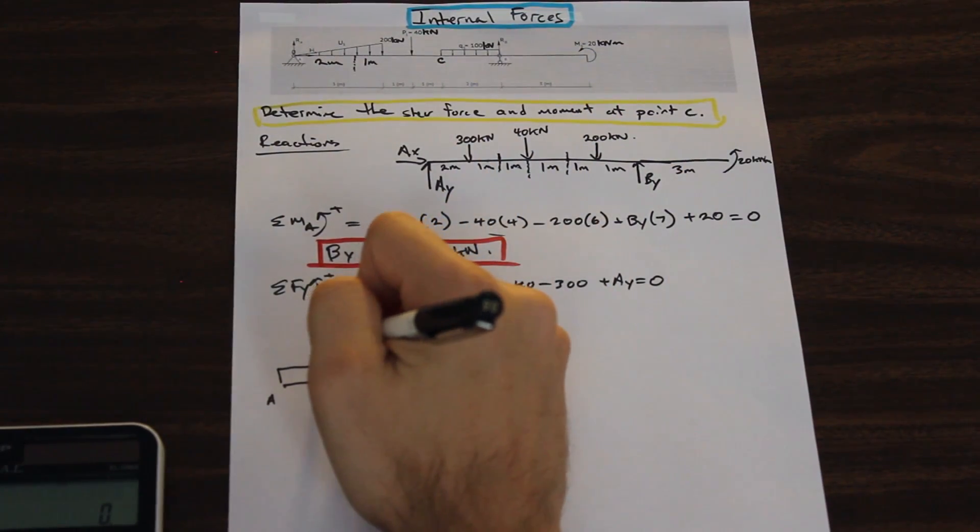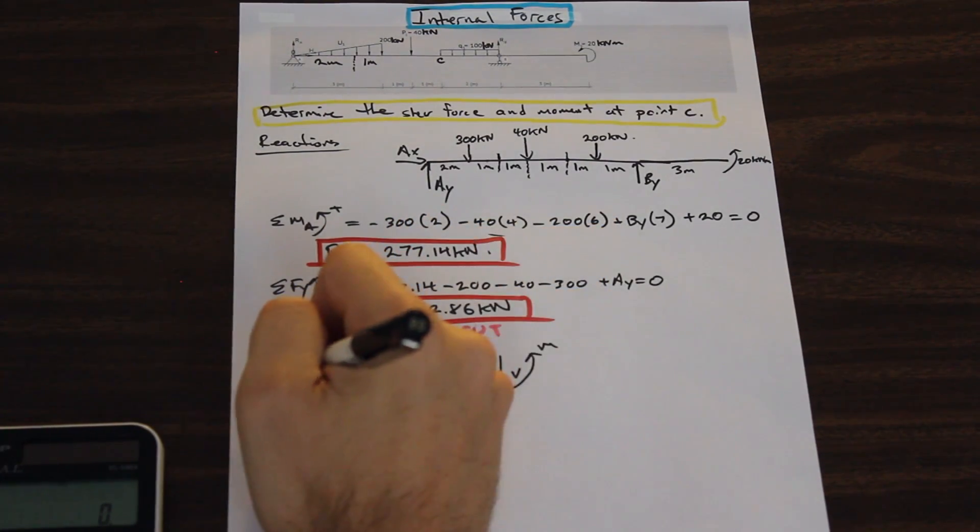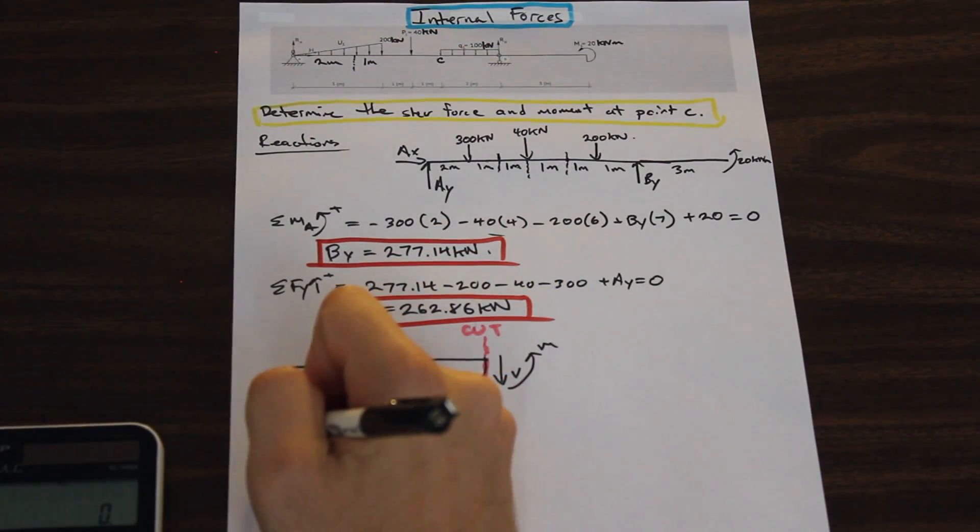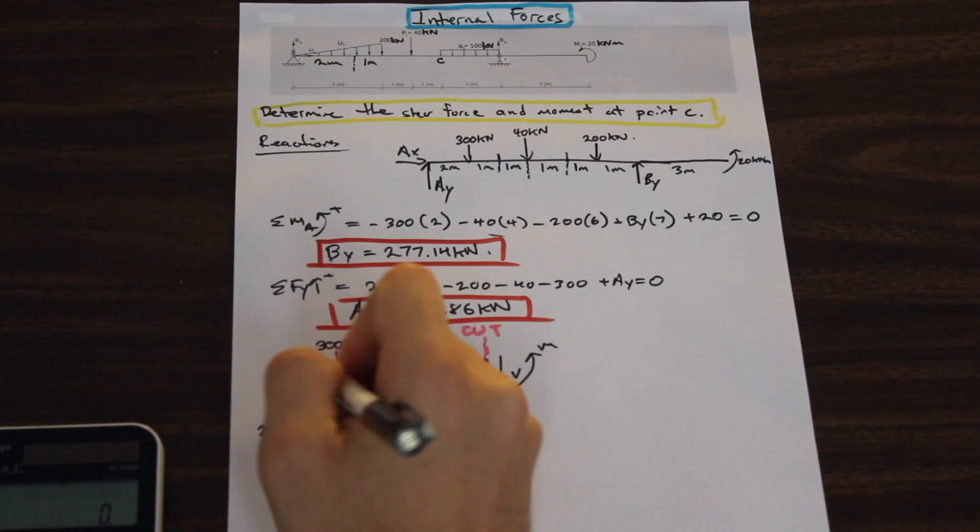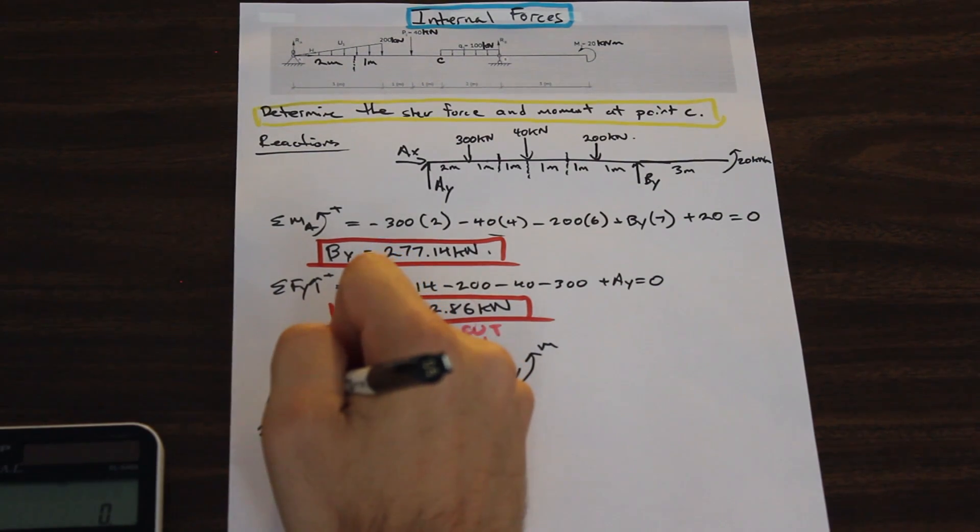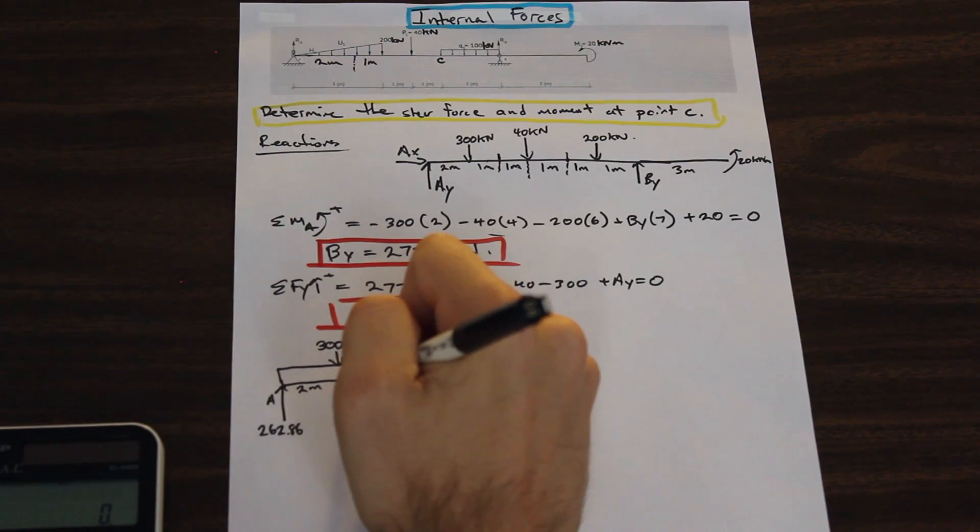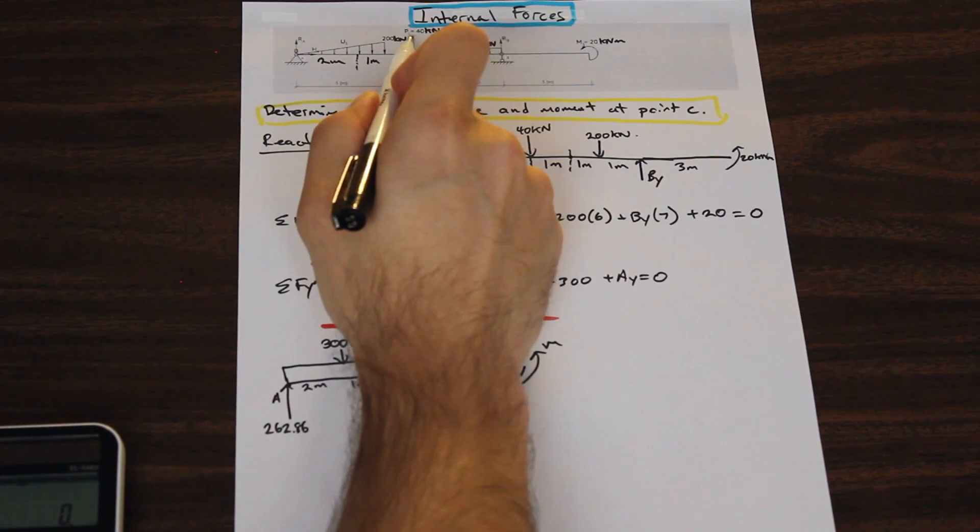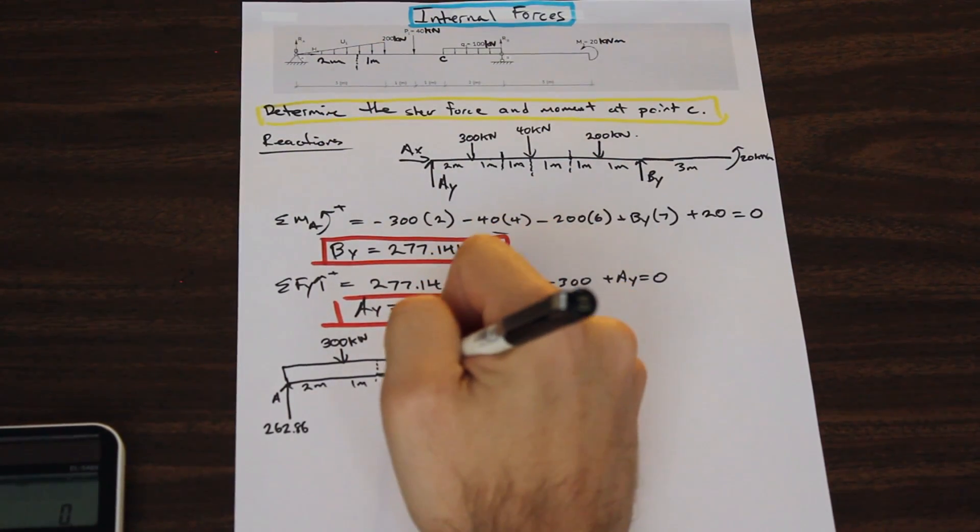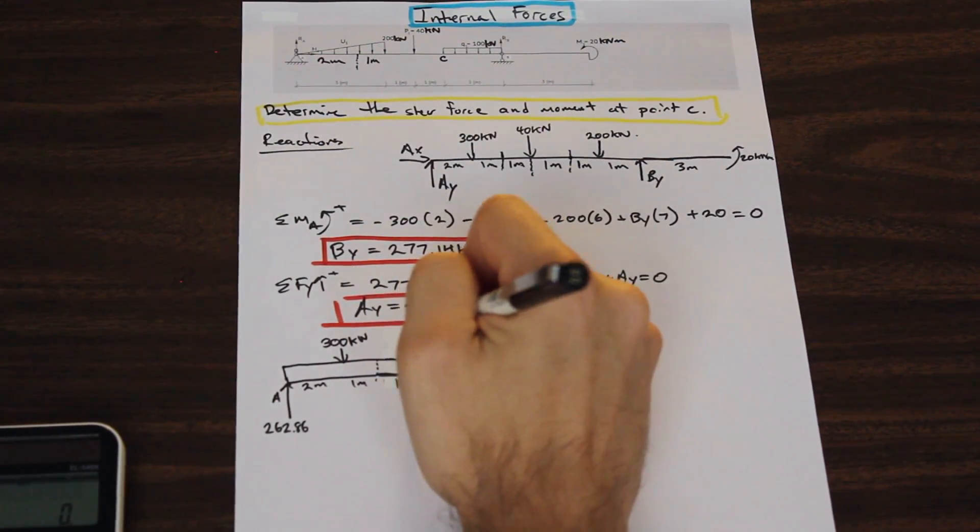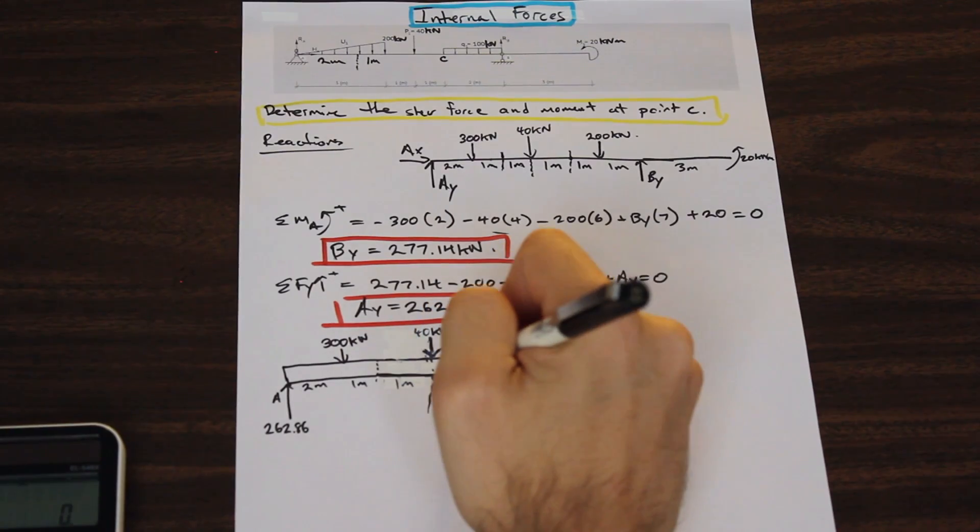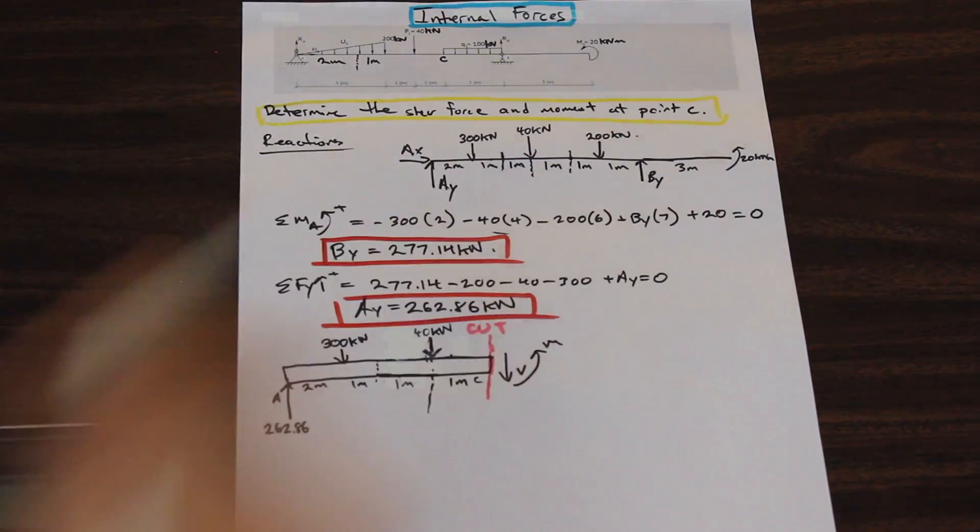We had the force at A, the reaction. That is acting upwards at 262.86. This was 2 meters, if we recall. This was 1 meter here. We're only going up to point C. So we have this 40 kilonewton force here before C, and that acts in the center here. So this is 1 meter, this is 40 kilonewton, and this is also 1 meter to that force. Perfect.